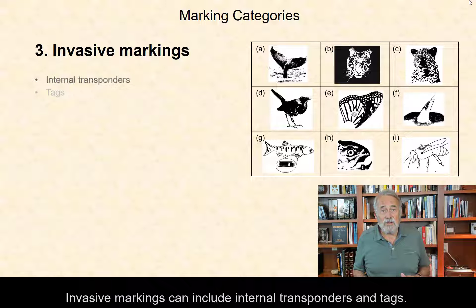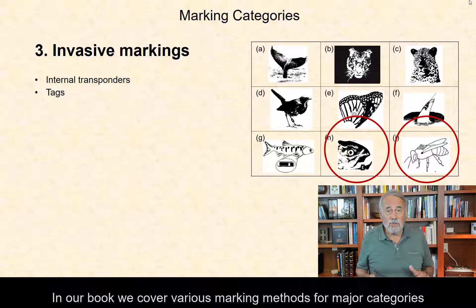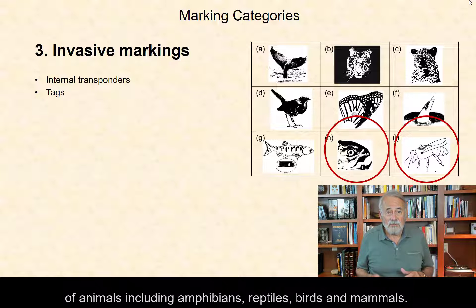Invasive marking can include internal transponders and tags. They provide reference to the literature and URLs for websites describing various marking methods for all major categories of animals, including amphibians, reptiles, birds, and mammals.